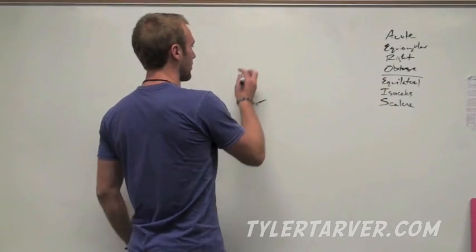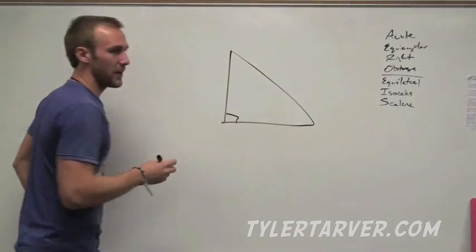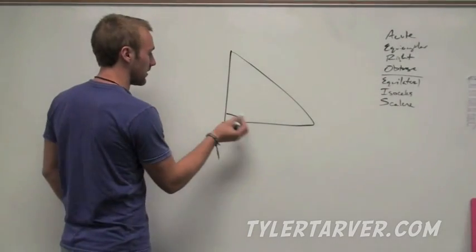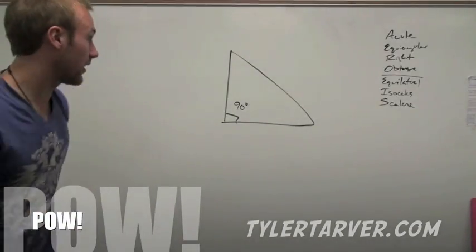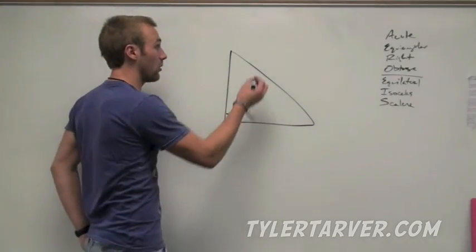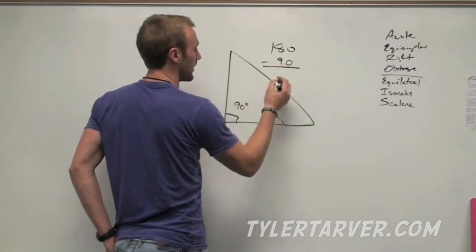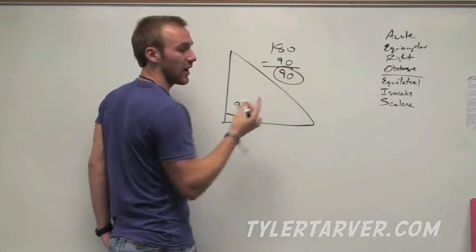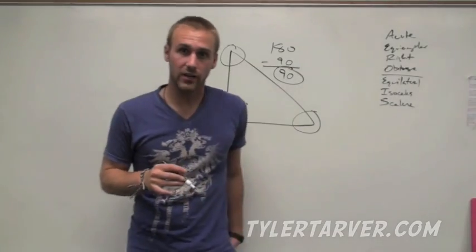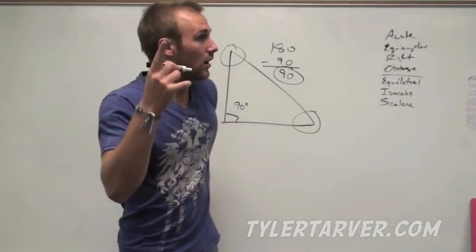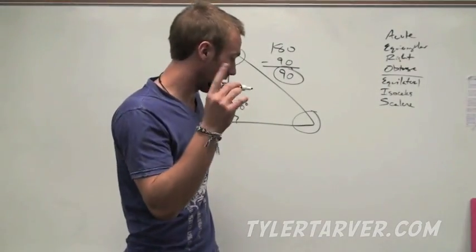Next is a right triangle, which you're going to use a bunch. That means it's going to have a right angle in it — one angle will be 90 degrees. That means the other two angles have to add up to 90 degrees as well. Because if the whole triangle is 180 degrees, you subtract 90 for that one angle, you've only got 90 left. So those two angles are going to add up to equal 90 degrees, which makes them complementary.